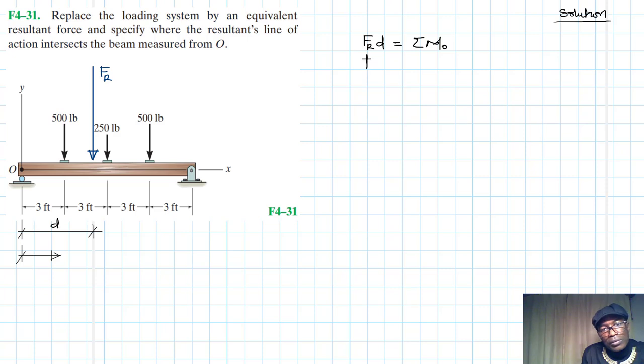FRR itself - the resultant force or summation of forces going up as our reference in the y direction - is equal to FRR which is equal to minus 500 minus 250 minus 500. This is equal to minus 1250 pounds.